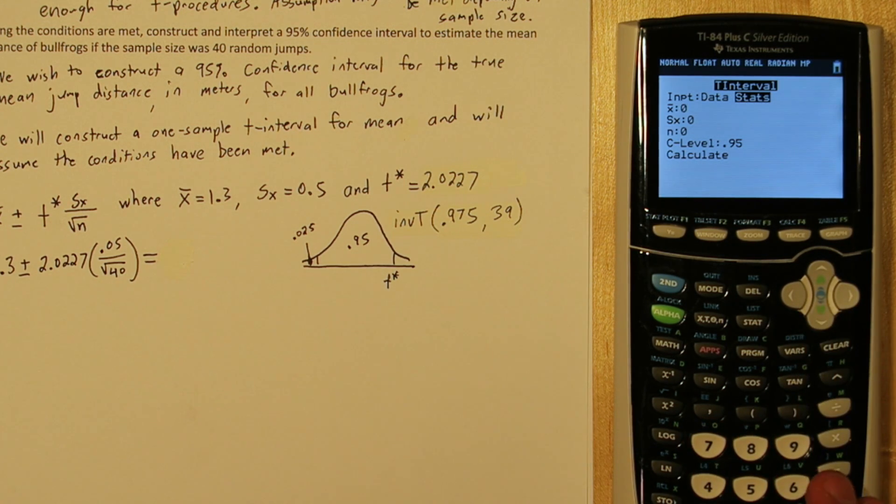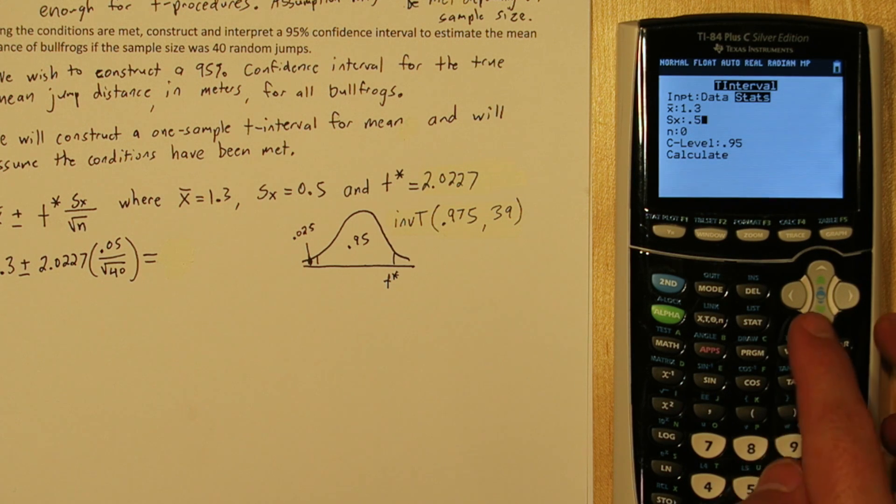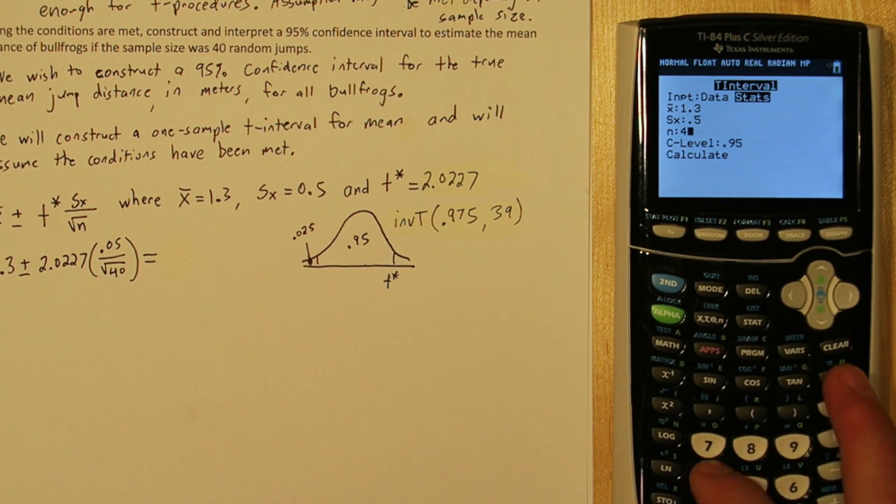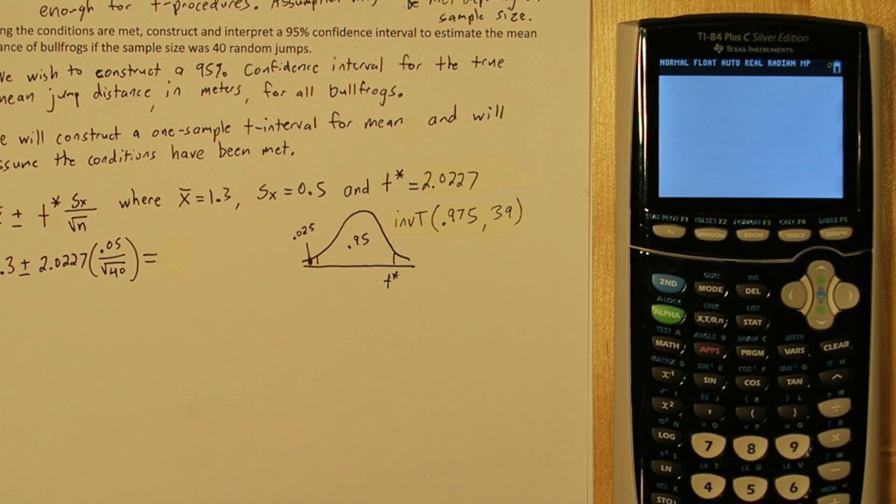So for x bar put 1.3, our sample mean, s sub x 0.5, our sample size was 40, and our confidence level is 0.95. When you press calculate, there's our confidence interval, 1.1401 to 1.4599.